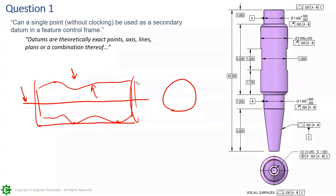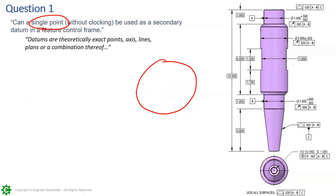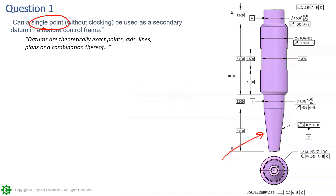A datum is a theoretically exact point, line, axis, or plane. So how can we get a single point as a datum? Datum features are the tangible surfaces, so there's no such thing as a single datum point as a feature. But a sphere is the only feature that will be interpreted as giving us only a datum point — we find the center point and that gives us a point. A cone, however, creates both an axis and a point — the converging point — so a handful of features utilize points, lines, and axes differently.